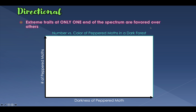For our example, I'm going to use one we've already discussed in class: our case study on peppered moths. Before the Industrial Revolution, all of the trees where the peppered moths lived were light in color, so the moths that survived tended to be the lighter-colored moths because they were able to blend in with the tree.